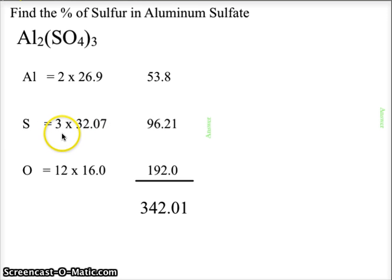Sulfur is 3 because we are reminded that we distribute the 3 to each of the elements inside the parentheses, giving us 3 times 32.07, or 96.21. And the 3 times 4 in that distribution of the subscript 3 to subscript 4 gives us 12 atoms of oxygen, times 16, which is 192. And these 3 masses for the individual elements add up to a total mass of the gram formula mass of 342.01 grams per mole.